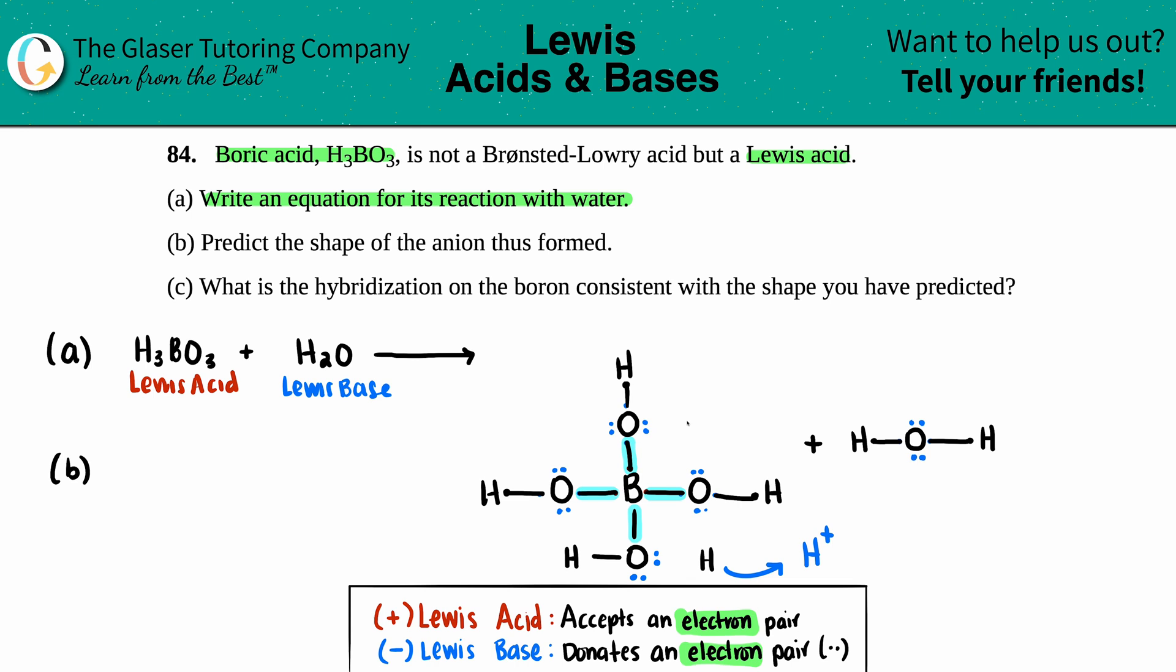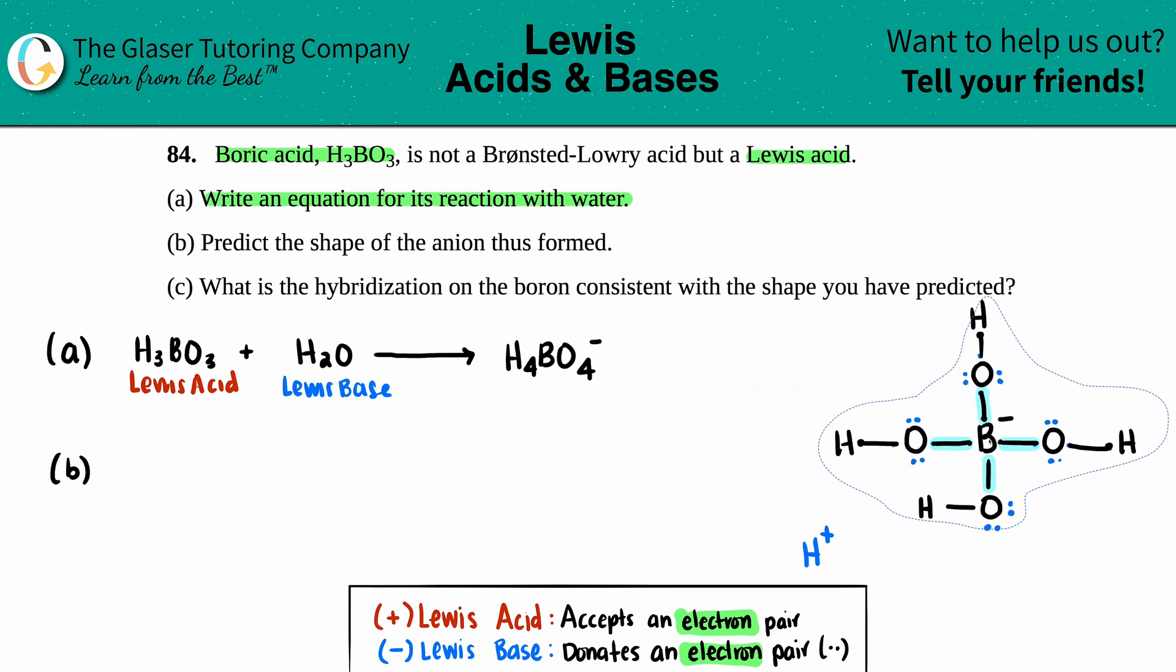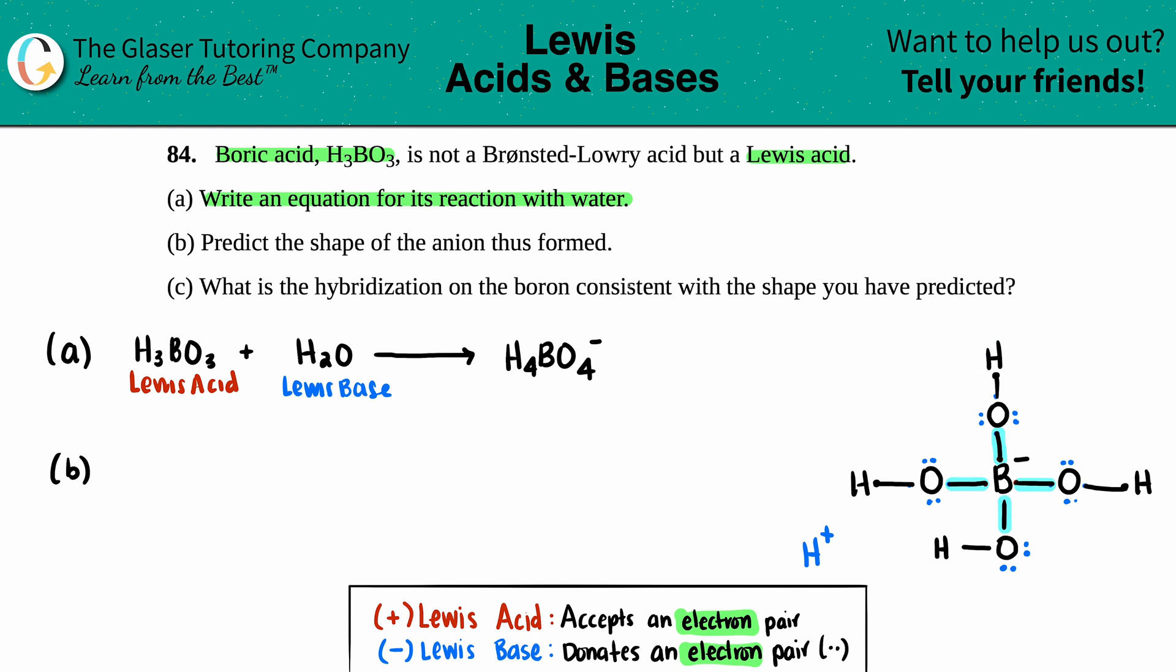Now count them up: it's going to be H₄BO₄ and that's the anion because the boron now has a negative formal charge, so that's a negative. Plus that H⁺ that had to leave because all the oxygens wanted to be the same. That is your final answer for part (a).